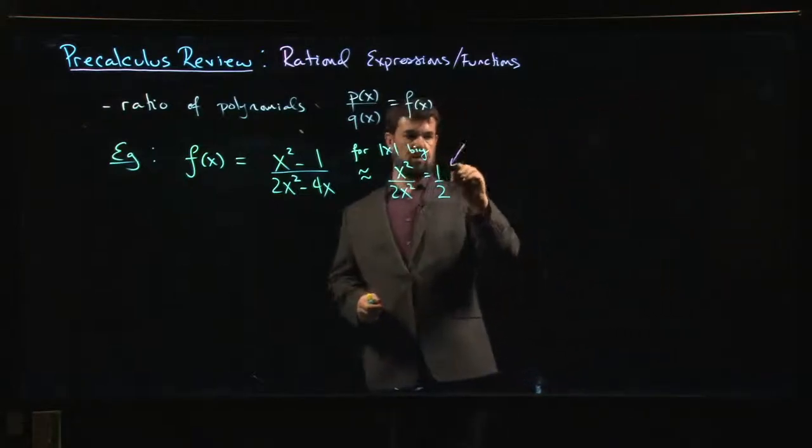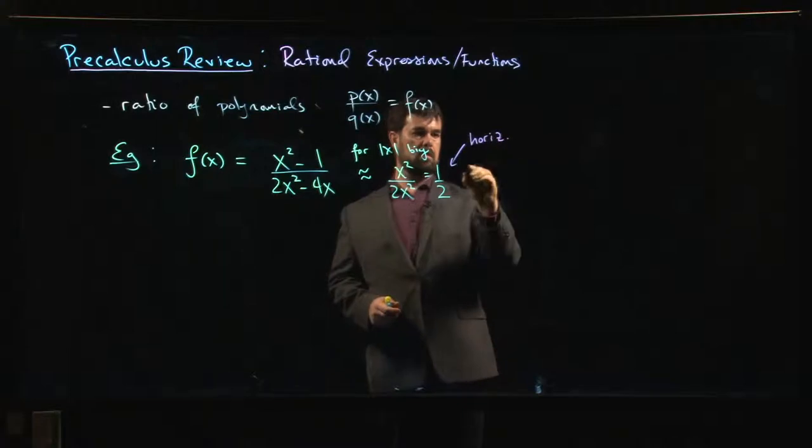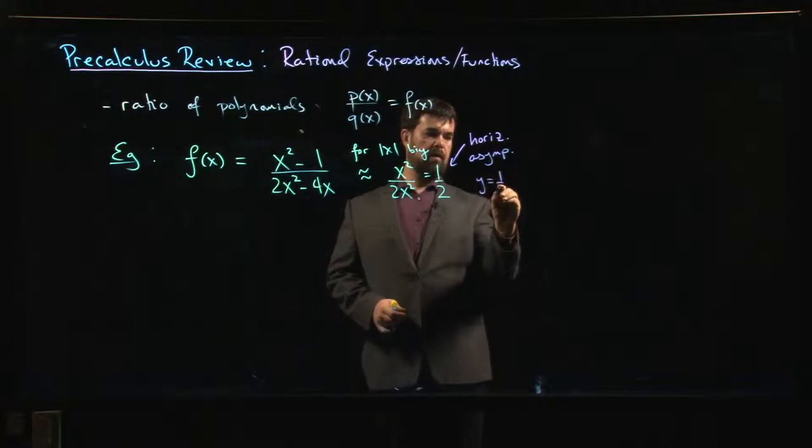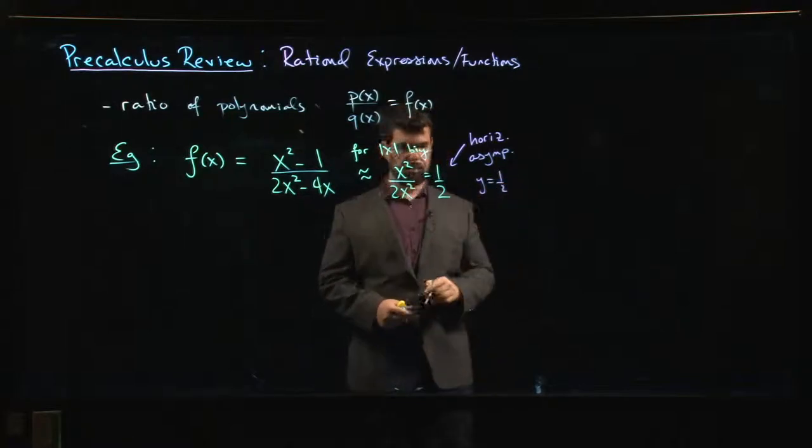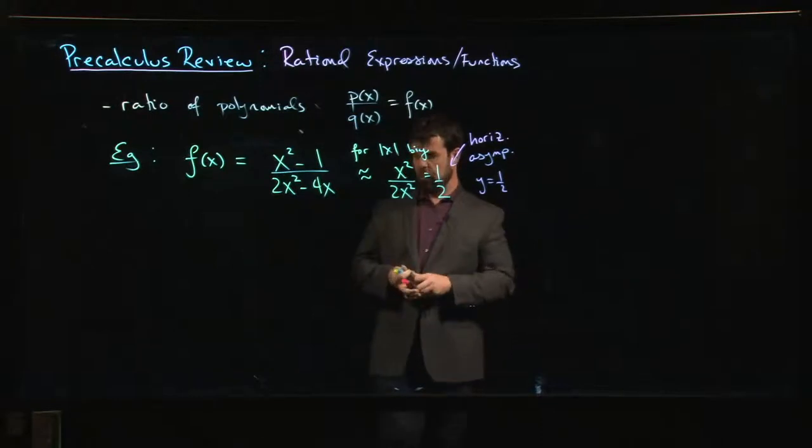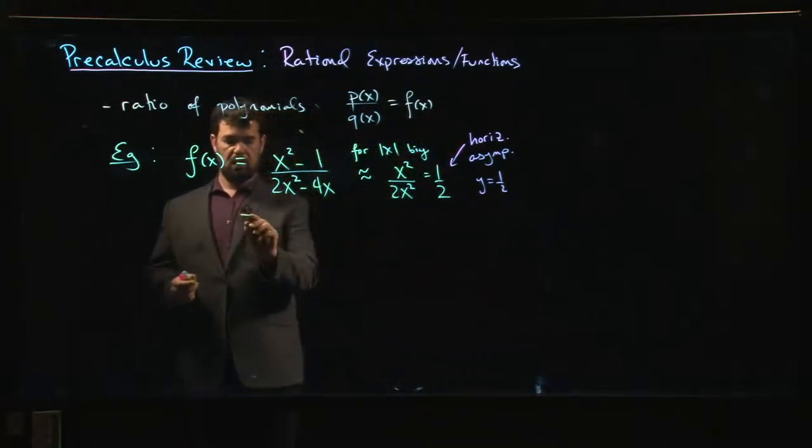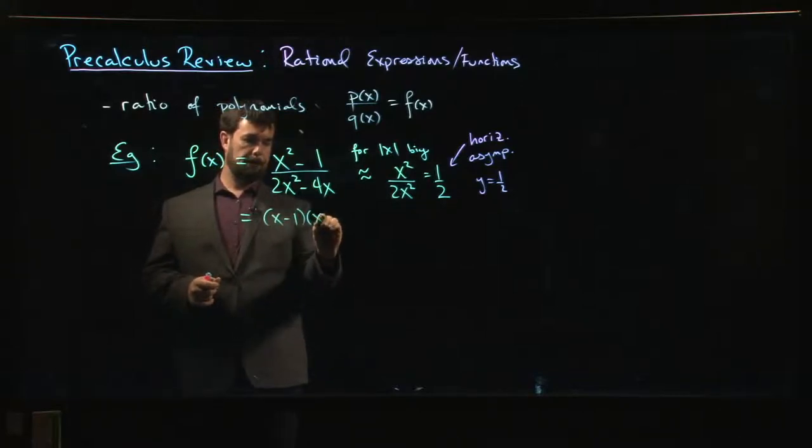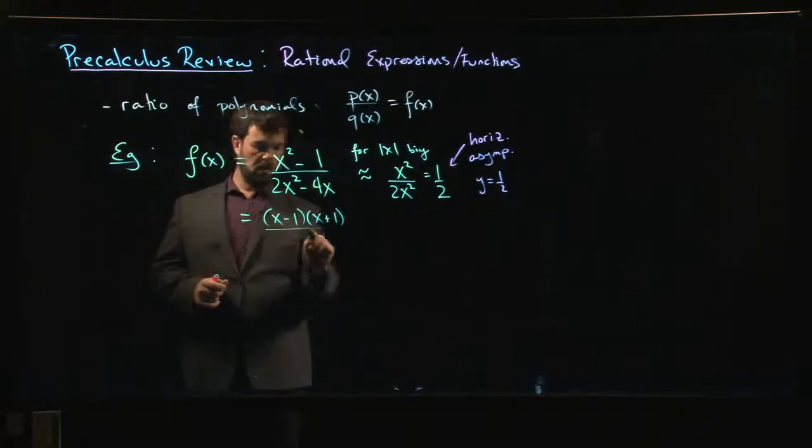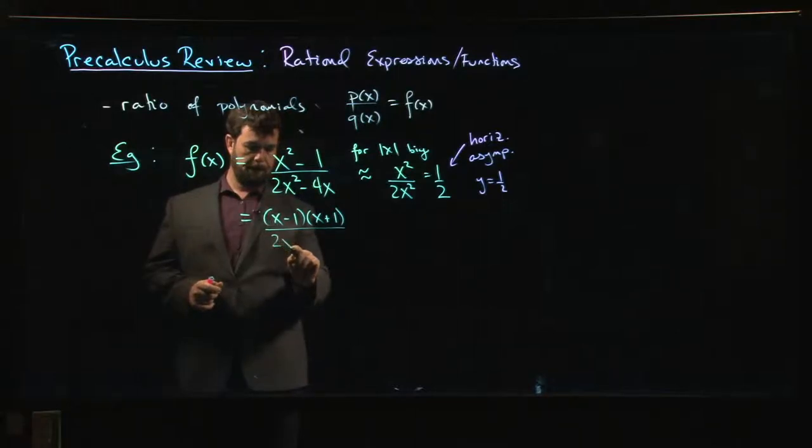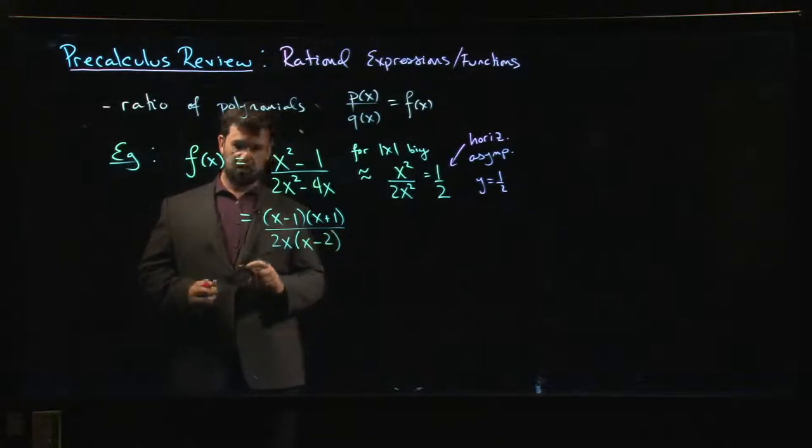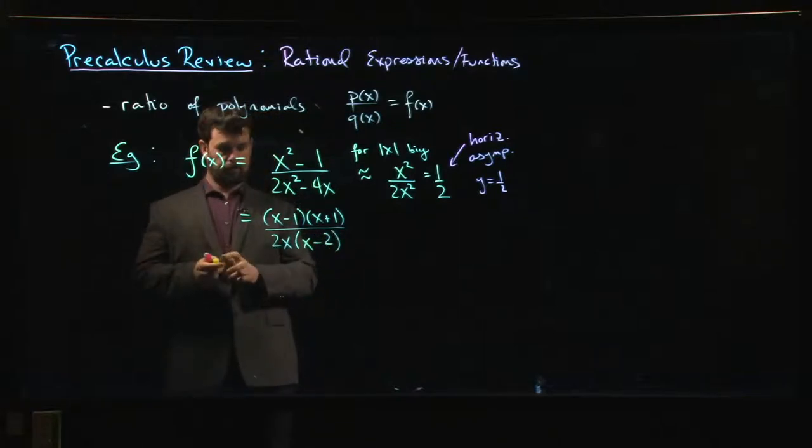For vertical asymptotes we need to factor. So we say okay, top is the difference of squares: x minus 1, x plus 1. Bottom, x is a common factor. Actually 2x is a common factor, so take out the 2x, we're left with x minus 2.